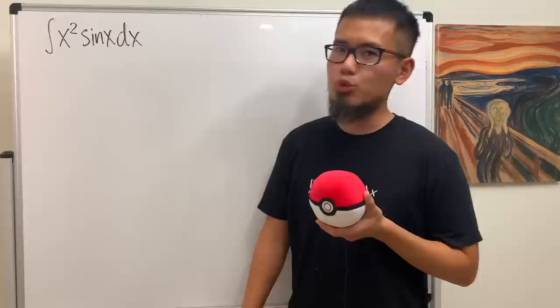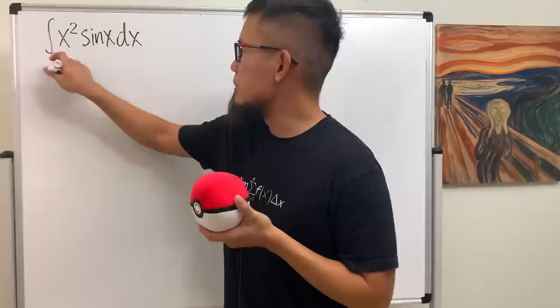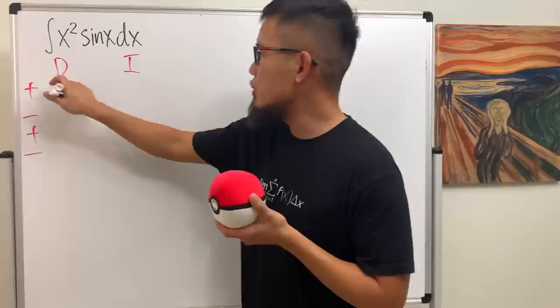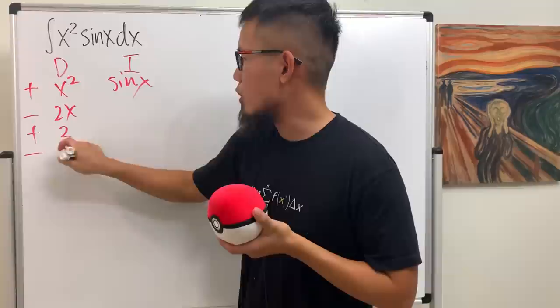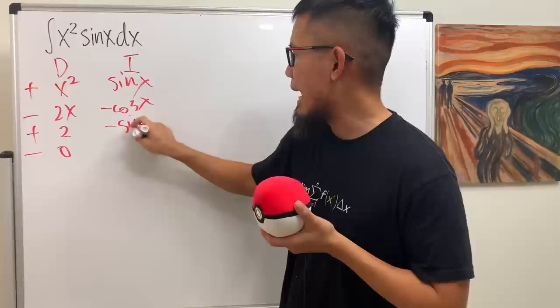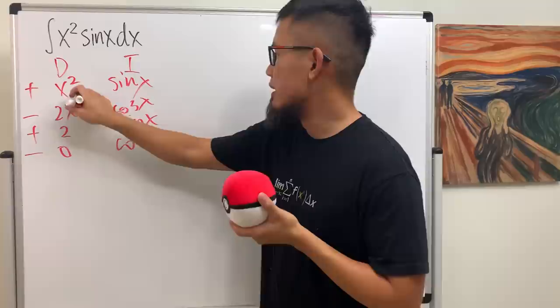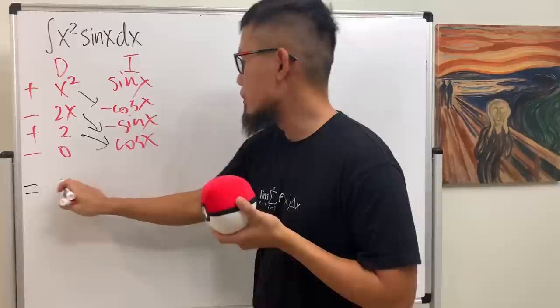Maybe you have seen your students do this on your exam when given an integral on a test. First they put D and I columns, then plus, minus, plus, minus on the side, and they differentiate x squared and integrate sin x. This right here is actually not so bad, and in fact, right here we end up with our answer already. This times this, this times this, and this times that — they write down the answer pretty quickly.